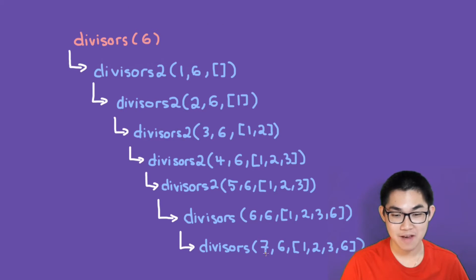So here, we have 7, which is larger than 6. So this tells us to stop the recursion. And at the end of the day, we're just going to return this list. So we return this list. It goes up the recursion tree. And at the very top, we're going to get the value 1, 2, 3, and 6.